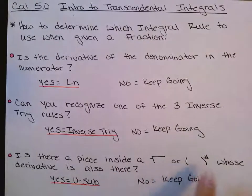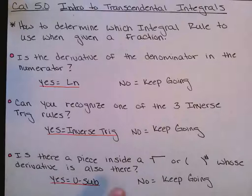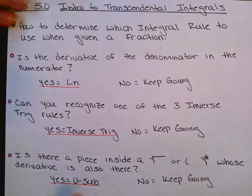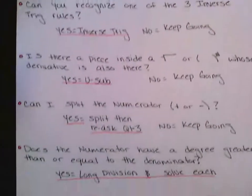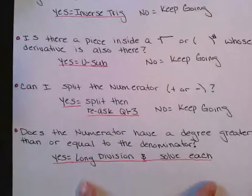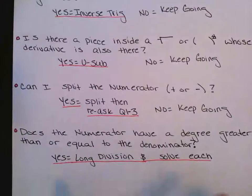The next one says: is there a piece inside of a radical or parentheses with an exponent whose derivative is also there? Then that's going to be a u-substitution that you had just learned at the end of last lesson. If not, keep going.